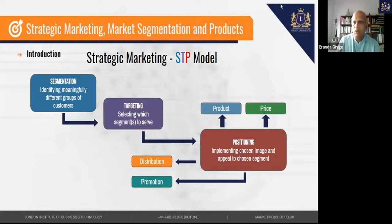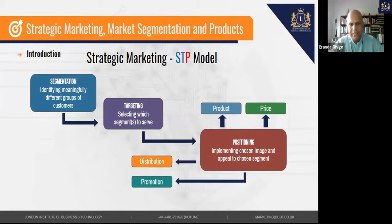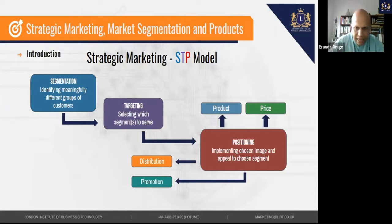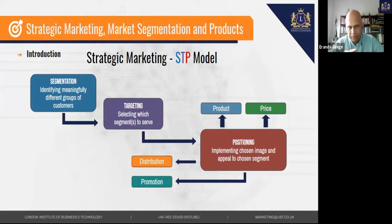We will slowly start talking about the STP model. STP stands for segmentation, targeting, and positioning. We will try to understand this part because this is where you have a strategy — you've done your market research, you have a strategy, and now you're really trying to position the brand or the product.